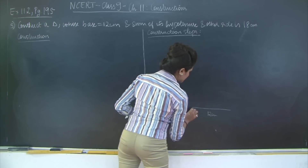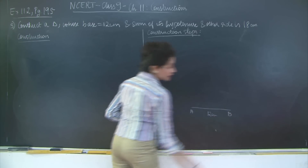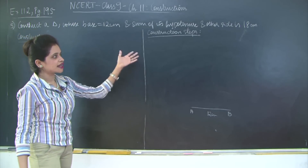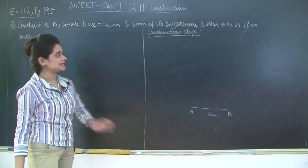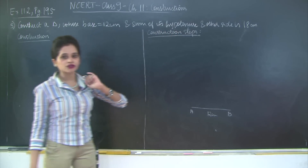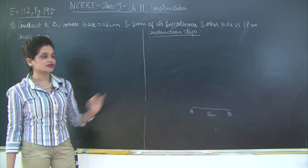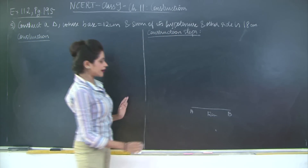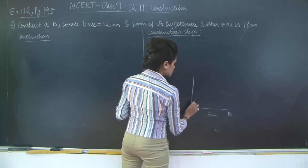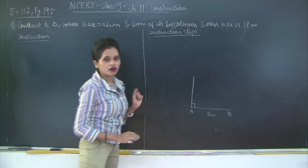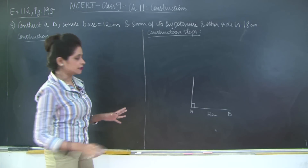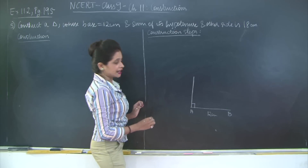Let's call this base AB. The sum of its hypotenuse and other side is 18 centimeters. This point is very important — the word hypotenuse means we have a right angle triangle. Let the right angle be at point A, and let my triangle be ABC, so the third point is C, which we need to find.